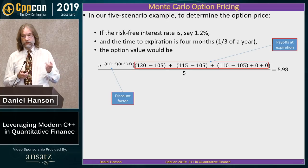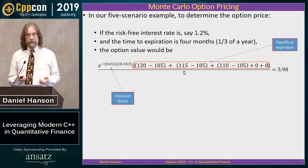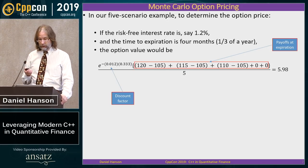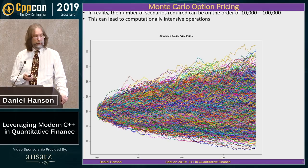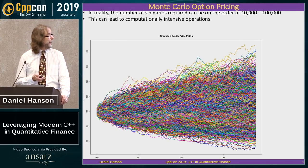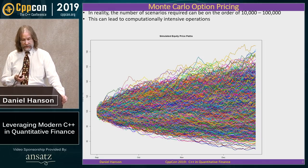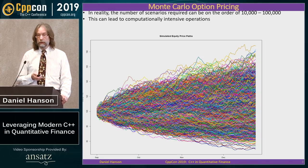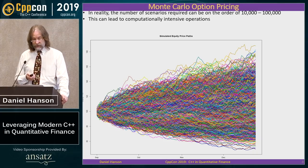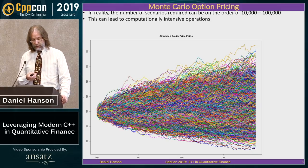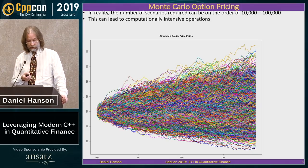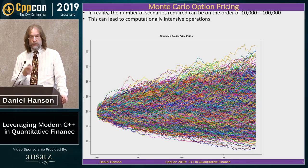In reality, five scenarios is not going to give us a good value. We're typically going to be looking at about 10,000 to 100,000 scenarios. As you can imagine, this can lead to rather computationally intensive operations. But the cool thing is if you plot it all out, it kind of looks like a Jimi Hendrix album cover.